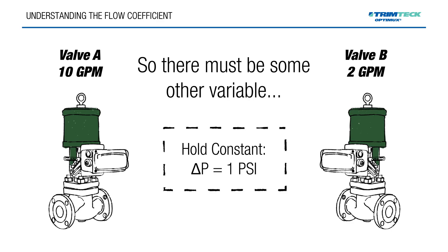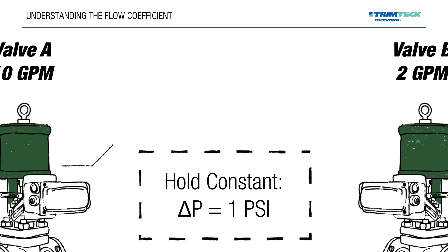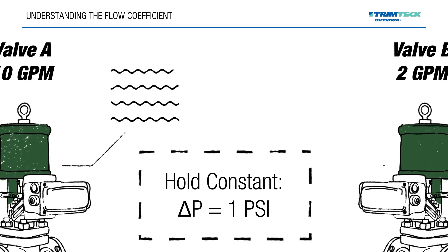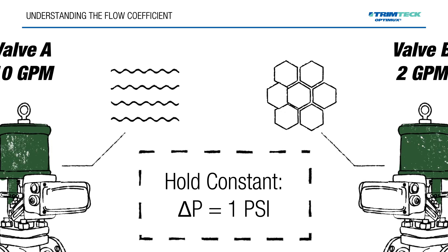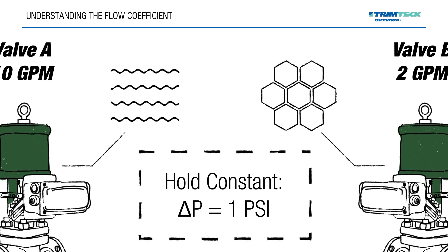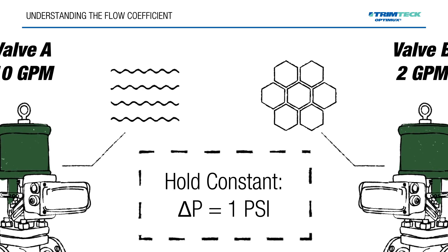We take a closer look and find that Valve A is flowing water and Valve B is flowing honey. The composition of the fluid flowing through the valve also has a lot to do with flow rate. Honey is much more viscous and denser than water, therefore it will flow more slowly through the same opening than water will.